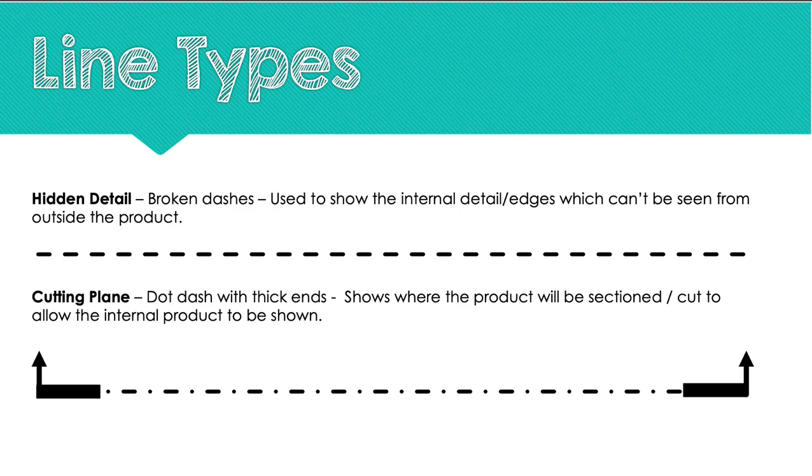Your last line that you need to learn is a cutting plane. That is the dot dash dot line that we had previously, however this time it has thick ends with arrows. That shows where a product is sectioned or cut to allow the internal product to be shown. A cutting plane is not added to a drawing so that the manufacturer knows where to cut a product. Instead, it is a line that is shown, for example, on a plan, and then the drawing that would be on the elevation would be a cut of the plan. So it would show the internal parts of a plan. The slide at the end will give a better example of what a cutting plane is.